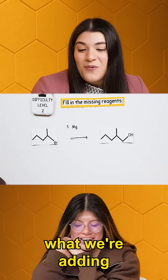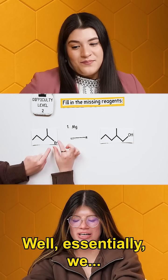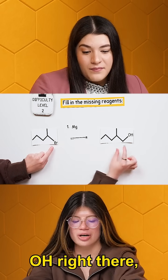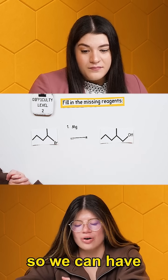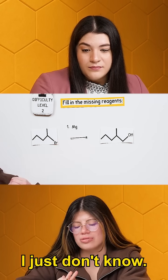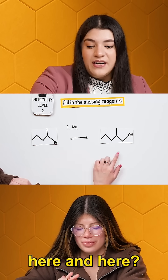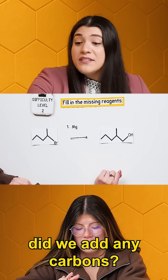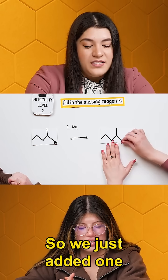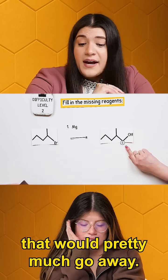How do we know what we're adding for our R group? That's what I'm wondering. Essentially, because this is going to get kicked off and we're going to add this OH right there. So we can have some sort of carbonyl group here. First thing I want you to look at is what changed — did we add any carbons? Yes, you did. How many? Just one. So we just added one carbon here, because like you said, that would pretty much go away.